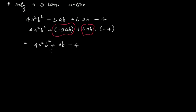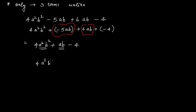Now what about adding another term: 4a squared b squared minus 5ab plus 6ab minus 7abc minus 4? Here minus 5ab and plus 6ab are like terms and add up to ab. But minus 7abc is a different term. So after simplification you have 4a squared b squared, plus ab, minus 7abc, and minus 4 — that is four unlike terms.